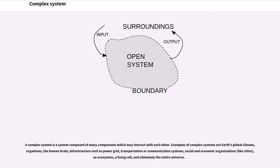infrastructure such as power grid, transportation or communication systems, social and economic organizations, like cities, an ecosystem, a living cell, and ultimately the entire universe.